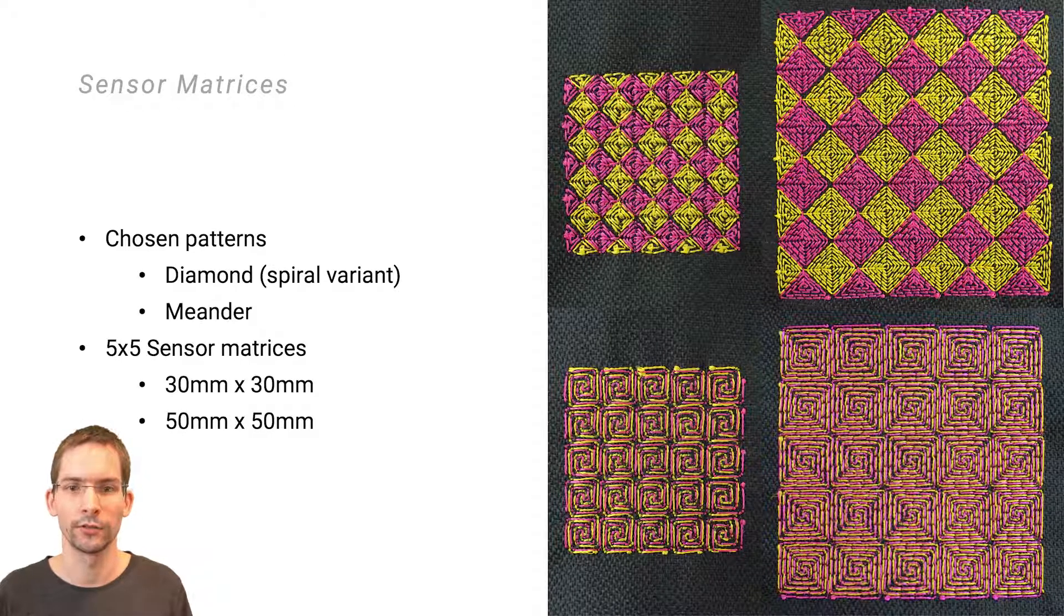The chosen patterns to continue with the fabrication of embroidered sensor matrices were the diamond spiral as well as the meander sensor layout. Therefore, we implemented each one of them in two different sizes.